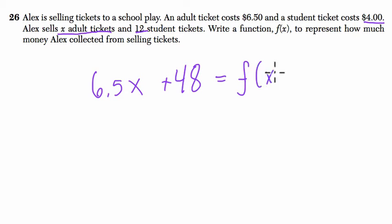And this is our function: 6.50X plus 48 - that's $6.50 per adult ticket plus the $48 total from selling the student tickets.